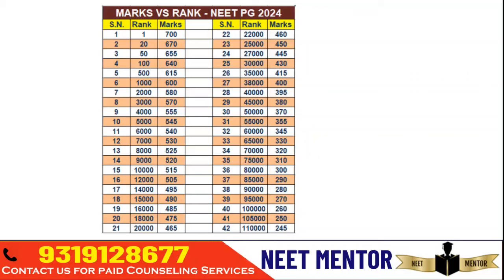For top 20 candidates, your score would be around 670 to 700. Under top 50, your score should be around 655. For top 100, your score should be around 640 plus. Those having 615 plus may rank under 500, and those with around 600 may come under top 1000. This can deviate by around 10 to 15 percent depending on the score range.